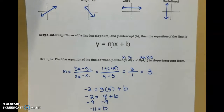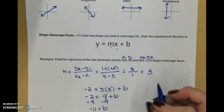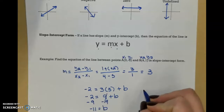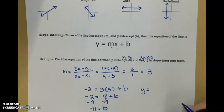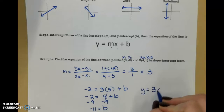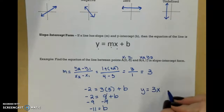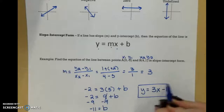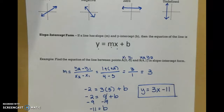But I'm not done — I have to write this as my equation. The equation of my line in slope-intercept form is going to be y equals 3x plus negative 11, so y equals 3x minus 11. And that is the equation of my line.